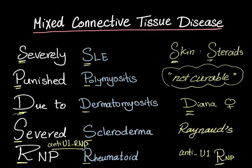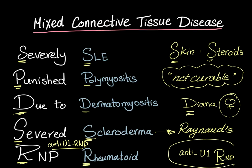The D in 'due' — remember Lady Diana. This disease is more common in females. The S in 'severed' stands for scleroderma, and remember that scleroderma has Raynaud's phenomenon commonly associated with it. The R in RNP stands for the anti-U1 RNP antibodies.